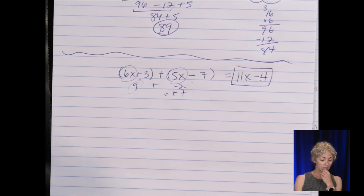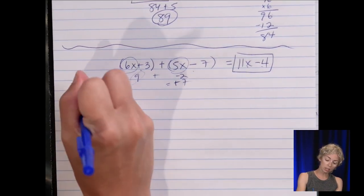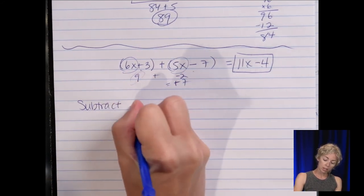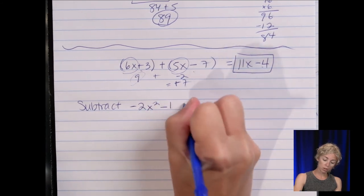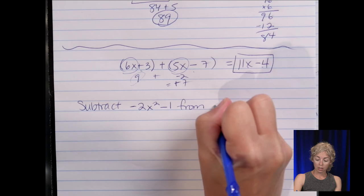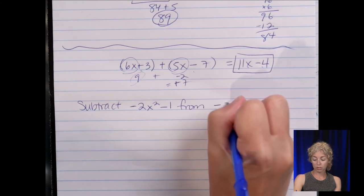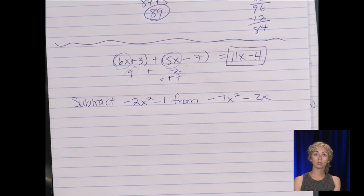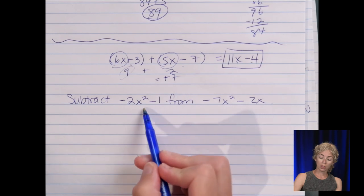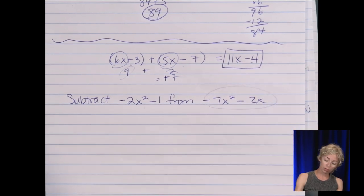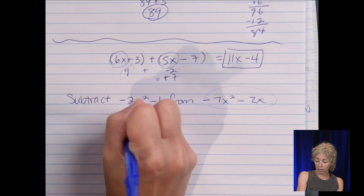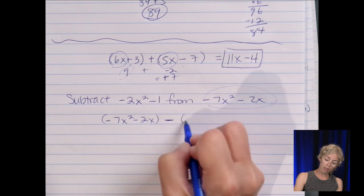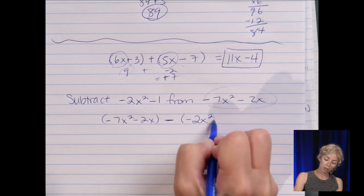All right so now that we did addition let's do subtraction but let's freeze it. So let's do subtract negative two x squared minus one from negative seven x squared minus two x. So order is important. Subtract this from this so this is written first. So negative seven x squared minus two x and I will use the parentheses so that binomial then we're going to take away negative two x squared minus one.